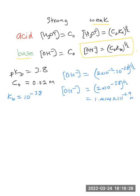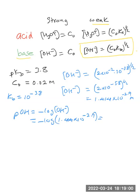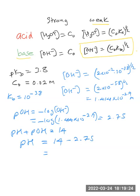What we need is the pH. We can calculate the pOH first: pOH equals negative log of the OH⁻ concentration, which is negative log of 1.414×10⁻²·⁹, and that comes out to approximately 2.75. We know that pH plus pOH equals 14, therefore pH equals 14 minus 2.75, which gives us 11.25. That is the pH of this solution.